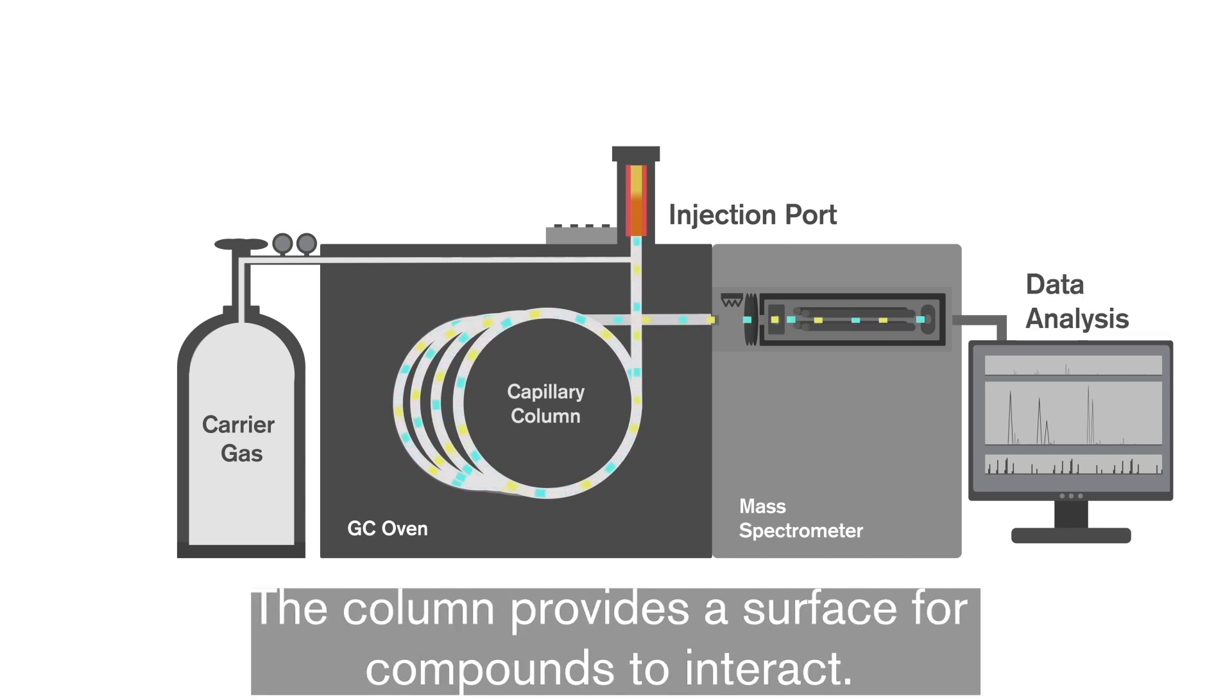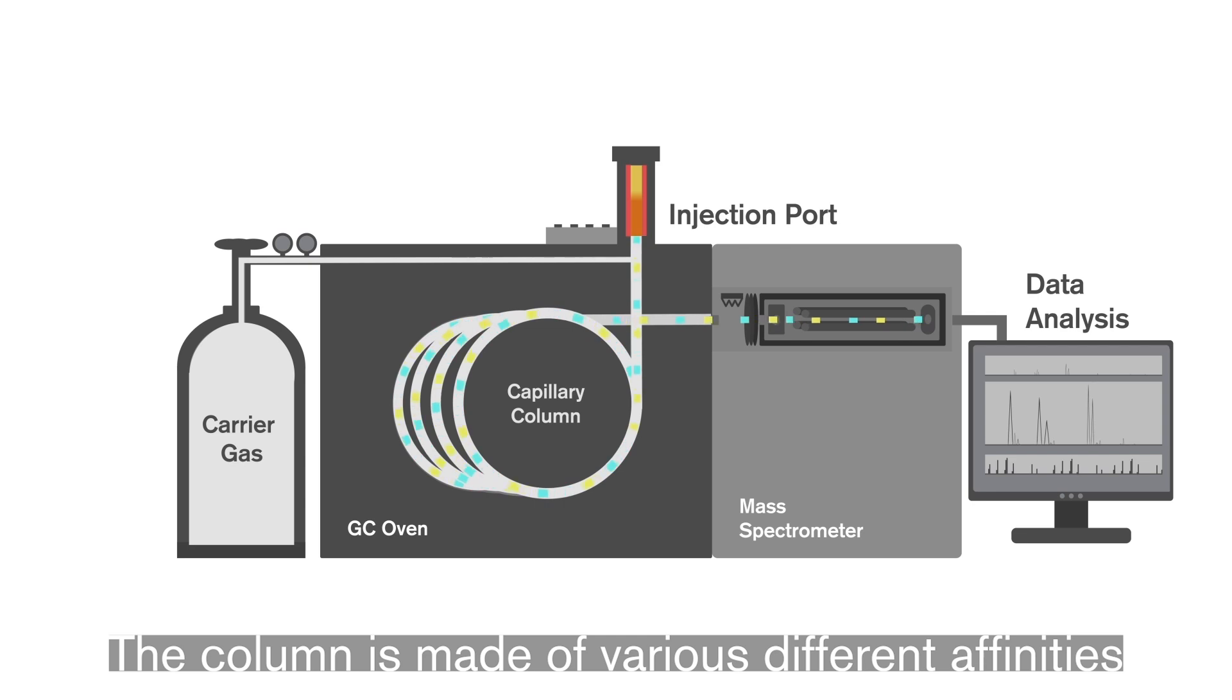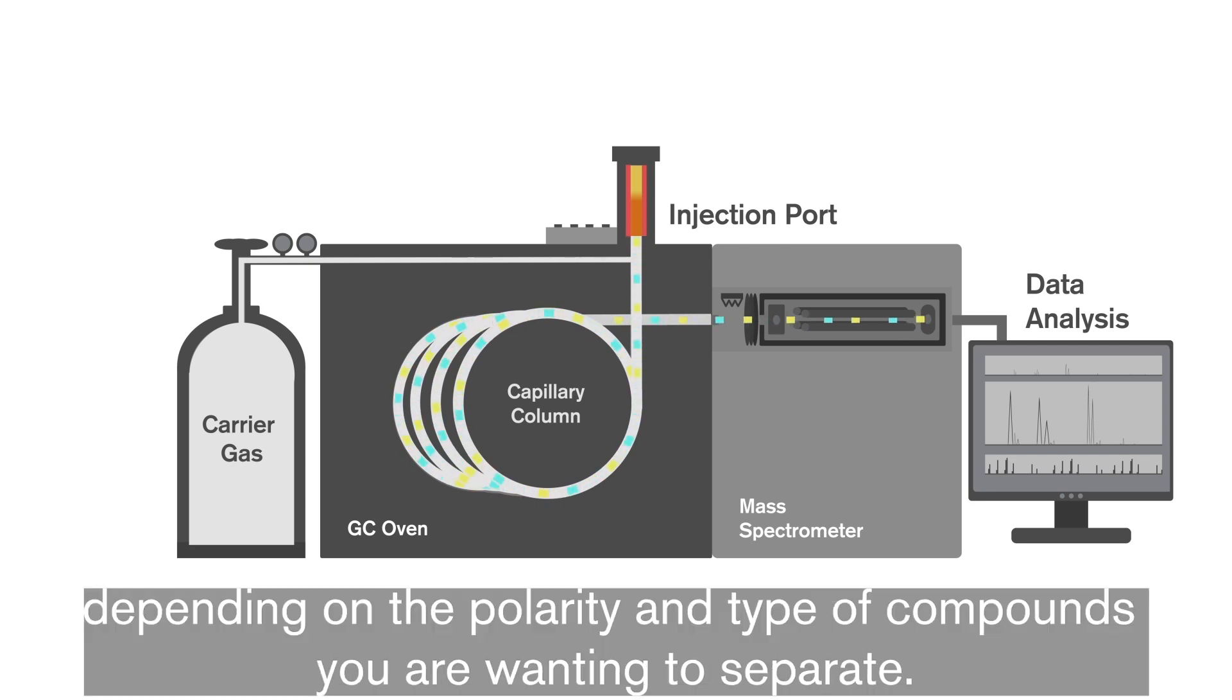The column provides a surface for compounds to interact. It allows the components to slow so that separation can occur. The column is made of various different affinities depending on the polarity and type of compounds you are wanting to separate.